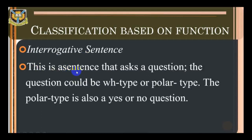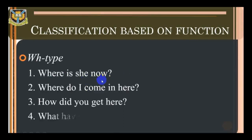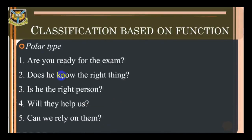Interrogative sentence: this is a sentence that asks a question. The question could be WH-type or polar type. The polar type is also a yes-or-no question. Examples of WH-type: 'Where is she now?' 'Where do I come in here?' 'How did you get out of here?' 'What have you done?' Examples of polar type: 'Are you ready for the exam?' 'Does he know the right thing?' 'Is he the right person?' 'Will they help us?' 'Can we rely on them?'